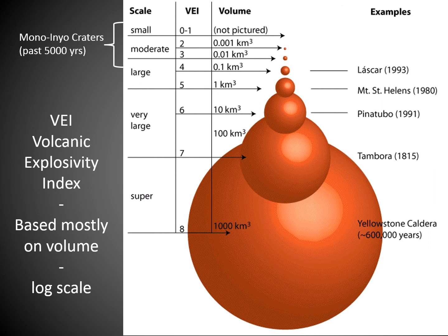Another way of classifying eruptions is the Volcanic Explosivity Index, or VEI. Think of it as a Richter scale for volcanic eruptions — it starts at zero and goes up to about eight. It's based mostly on the volume of material erupted, how much stuff comes out. And like the Richter scale, it's a log scale, so every jump in VEI is an order of magnitude bigger in volume.